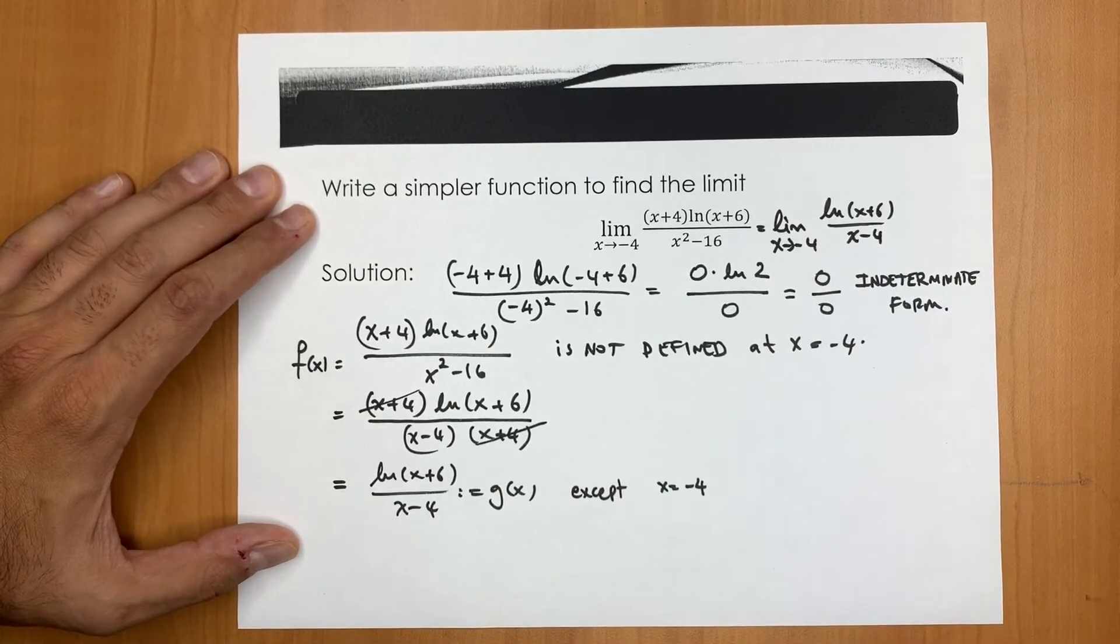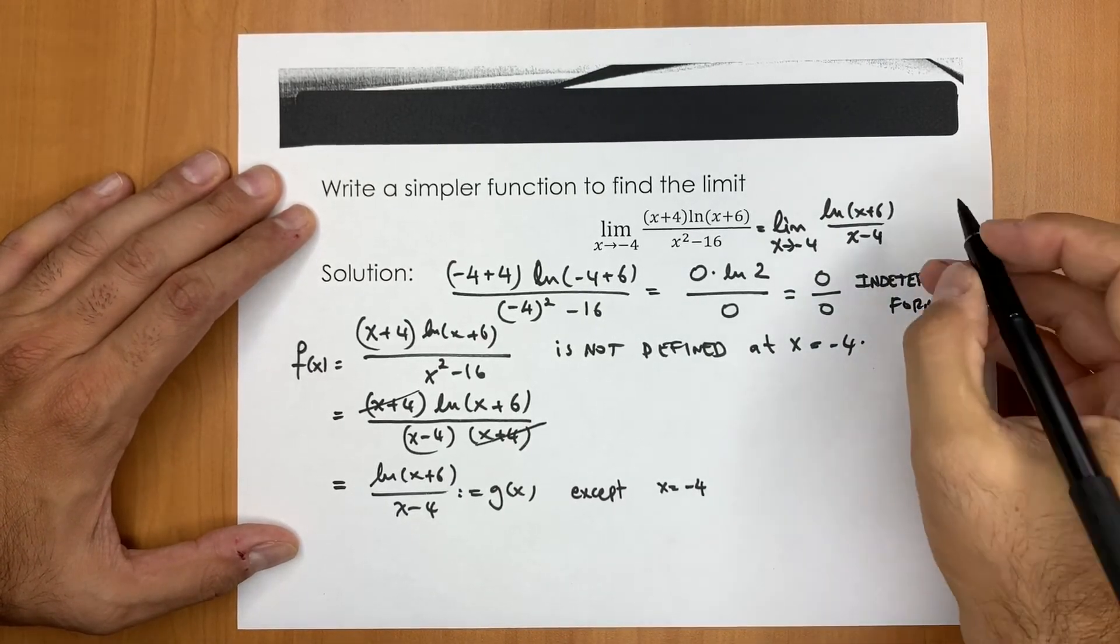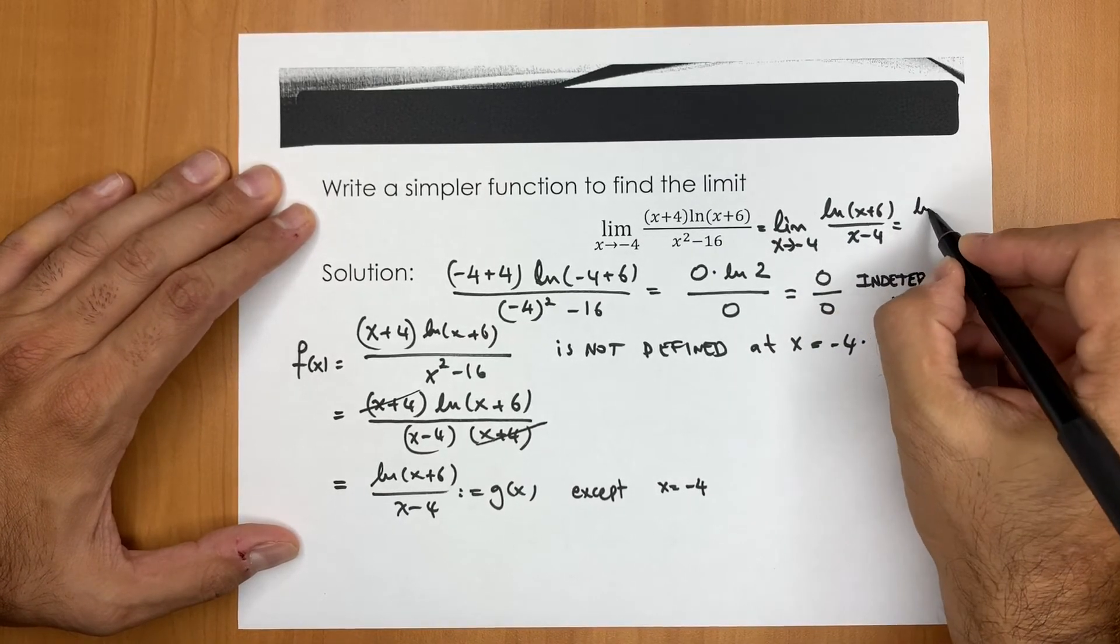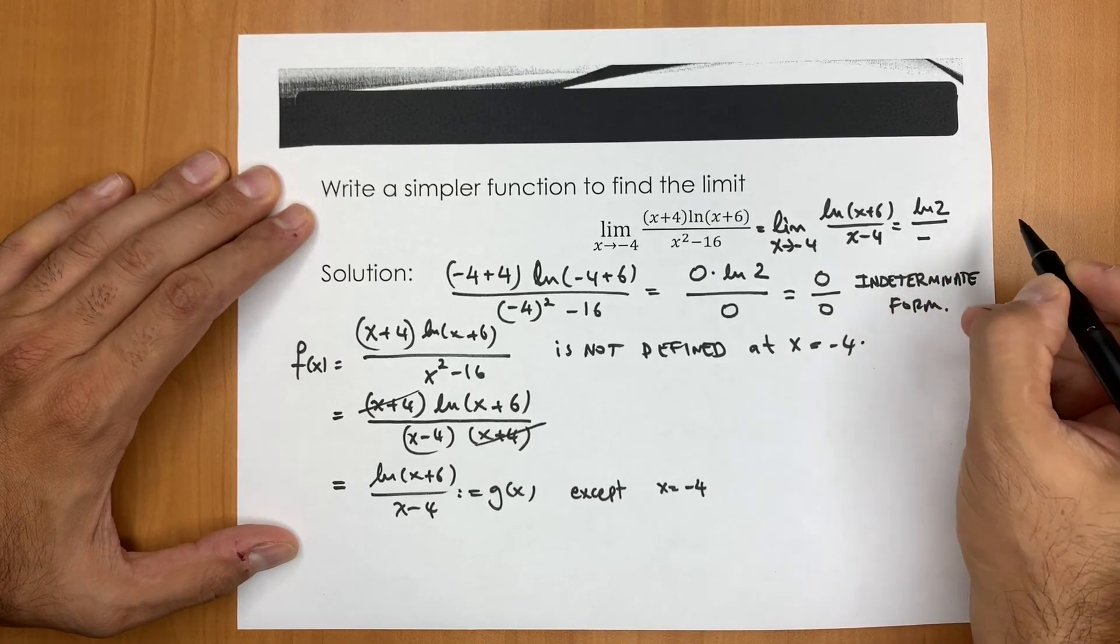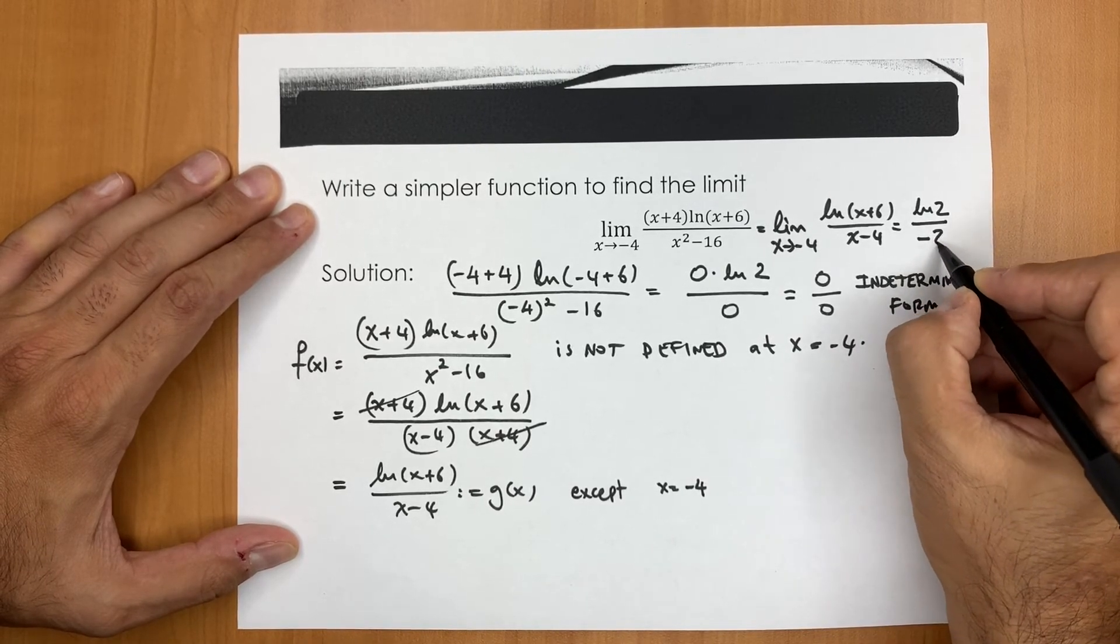And by using the direct substitution here, we get ln 2 over, let's see, minus 8.